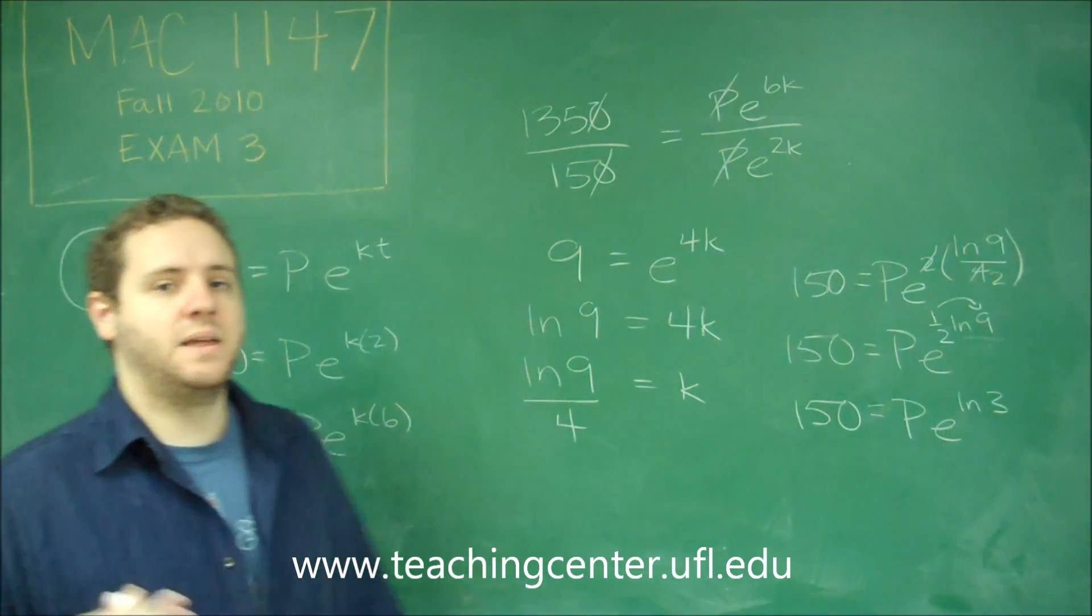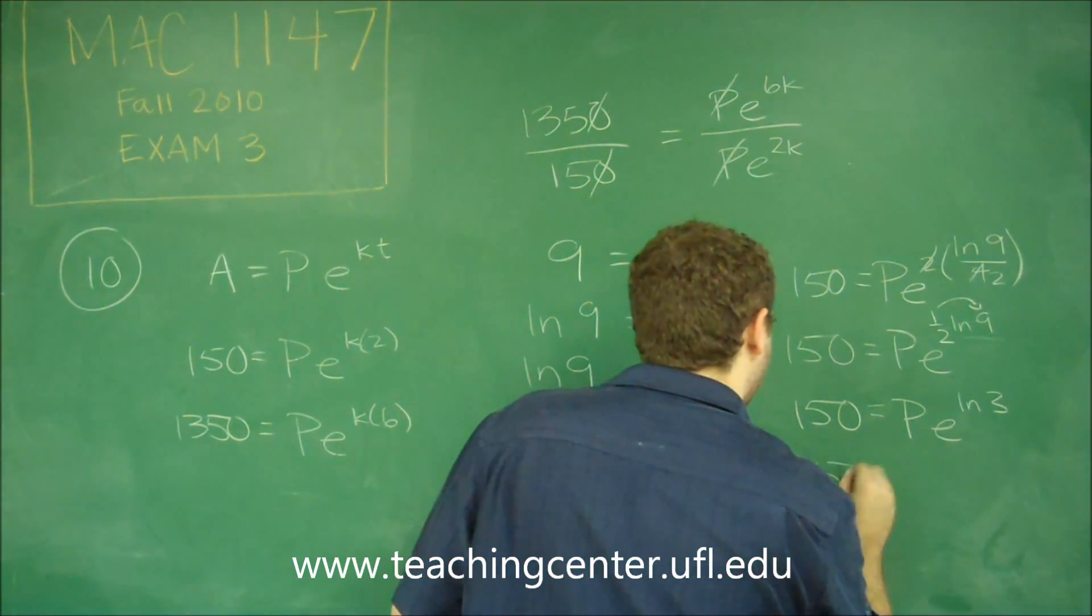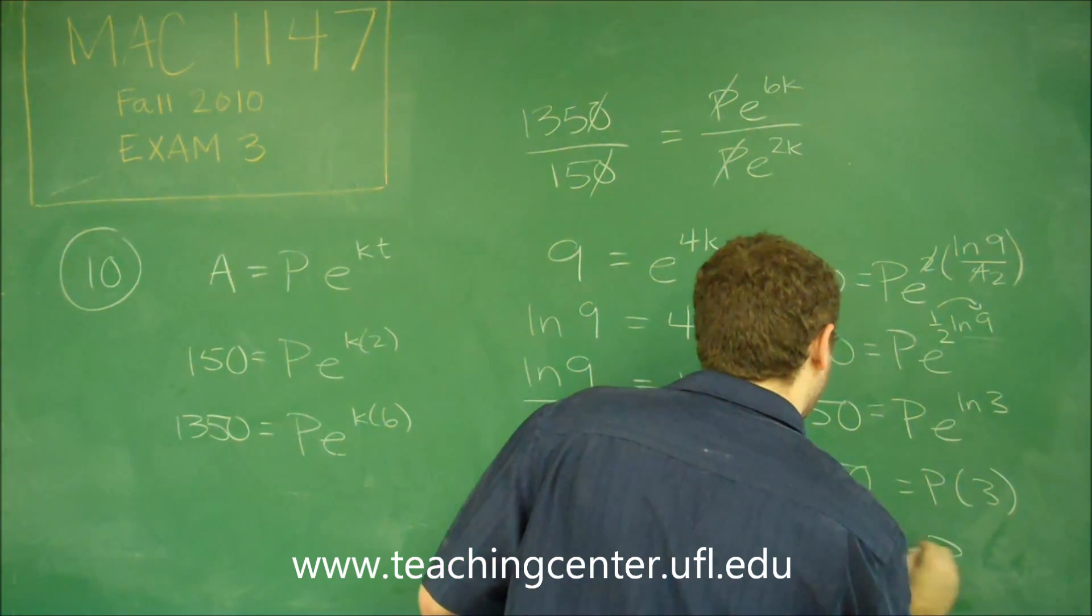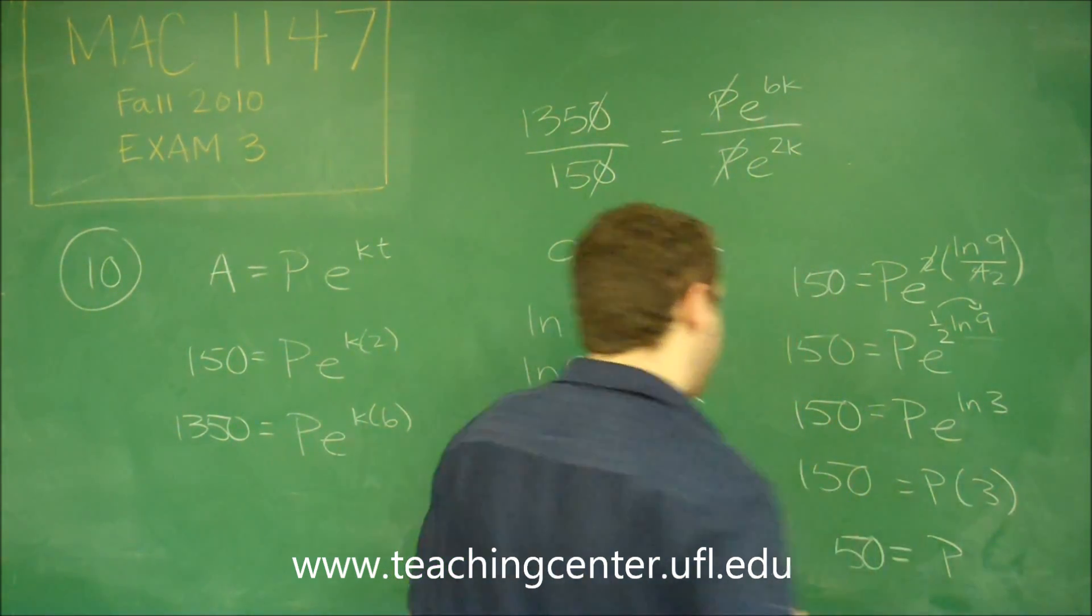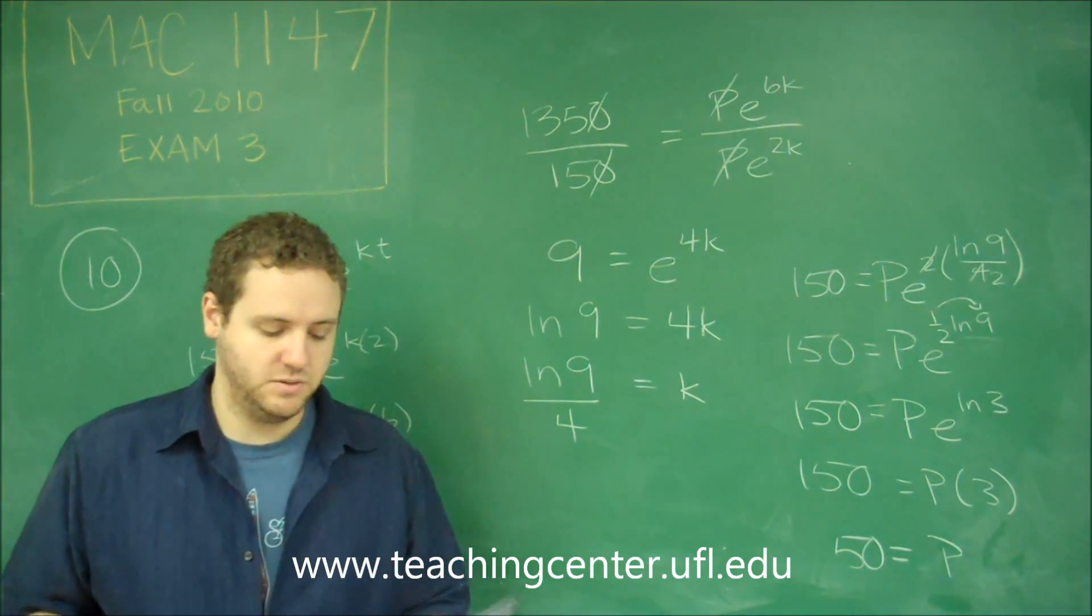Now, E to the ln 3 is just 3. So we get 150 equals P times 3. Dividing by 3 gives you that P is equal to 50 bacteria, which is the answer choice of P.